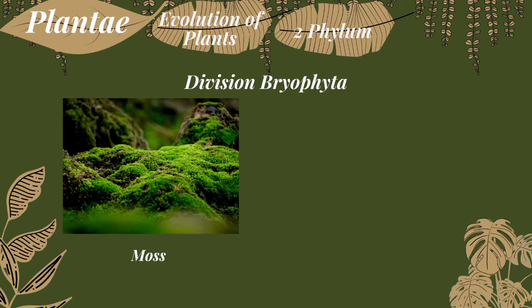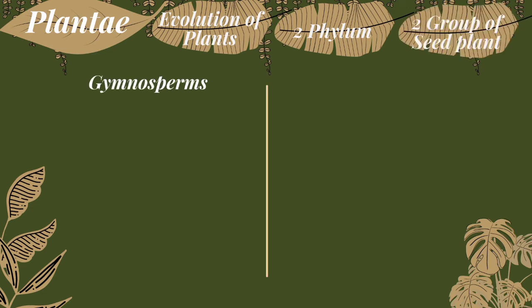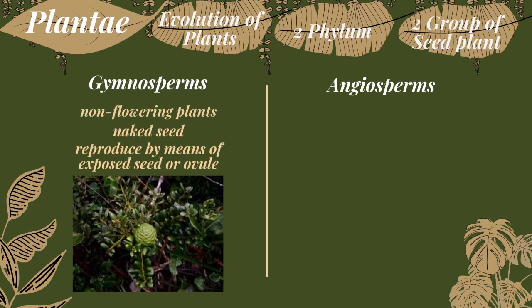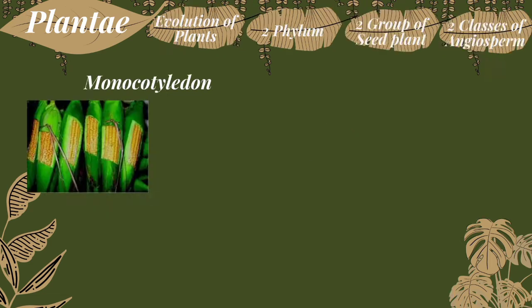An example of Bryophyta is moss, or what we know in the Philippines in Tagalog as 'lumot.' Moss is a water-absorbing mass and reproduces by spores or by growing new plants by cloning. Because Tracheophyta has many species, this vascular plant is divided into two: the gymnosperms, born in the third period of evolution, and the angiosperms, born in the fourth period. Gymnosperm is the non-flowering plant whose seeds are exposed to the environment — not inside the ovary of the plant — which is why it is called a naked seed. The angiosperm is a flowering plant and is known as the most diverse plant, divided into two classes: monocotyledon and dicotyledon.